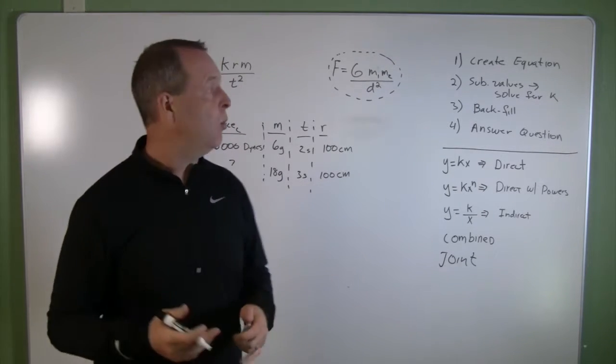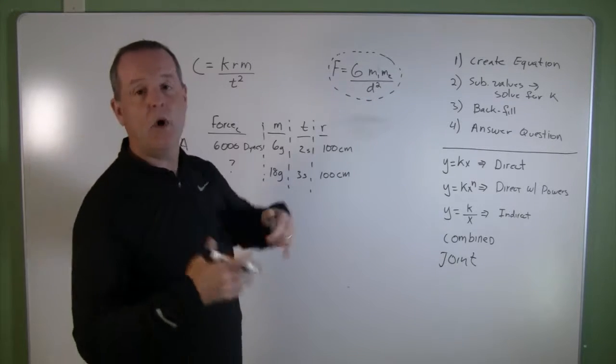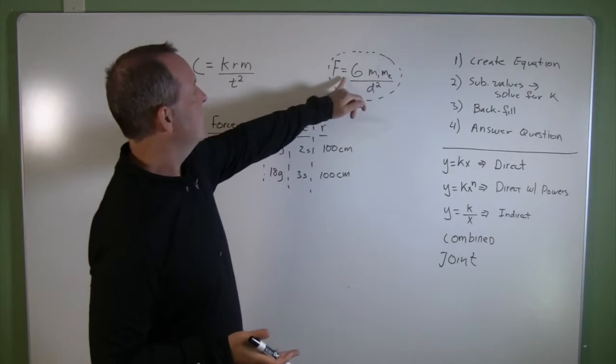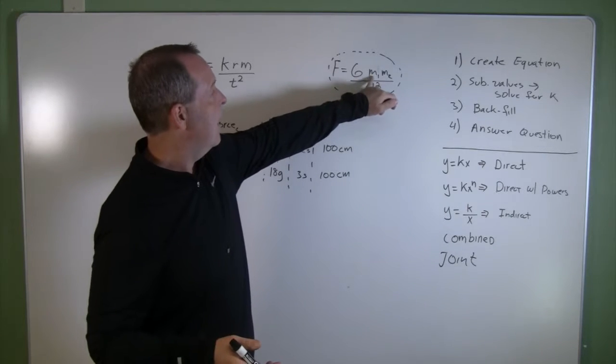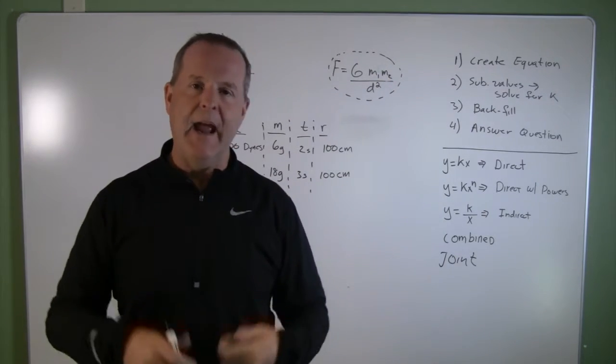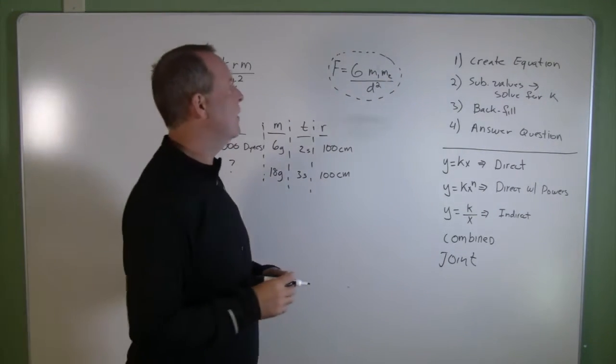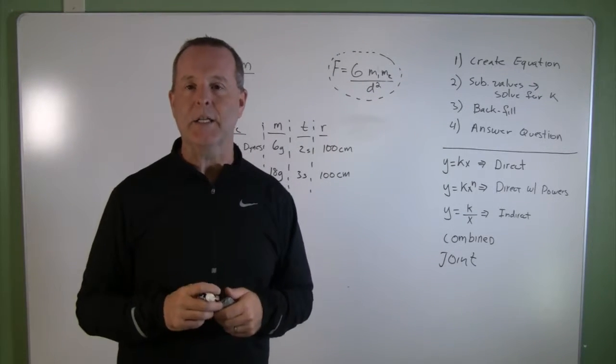One example that you might be familiar with is this one. The gravitational force between two objects is related to this gravitational constant, proportionality k, between the two masses divided by the square of the distance. And that was a relationship that we discovered to help us figure out how well two bodies attract each other.